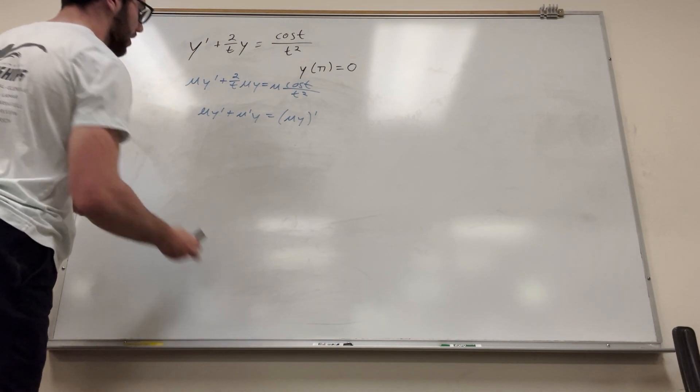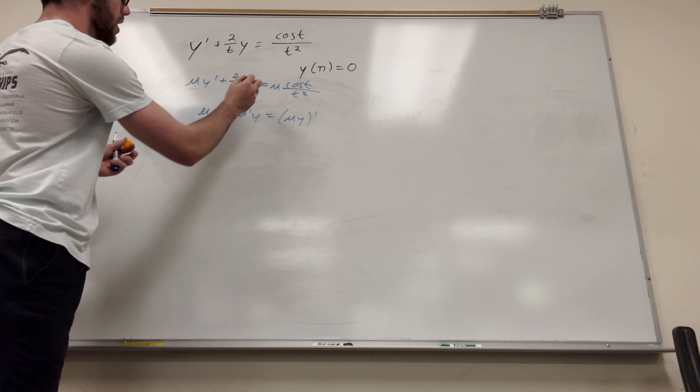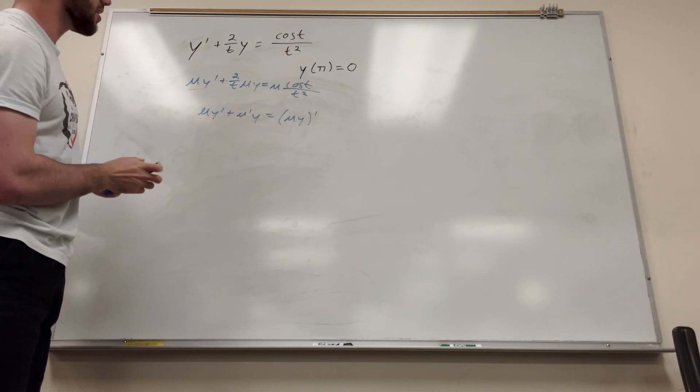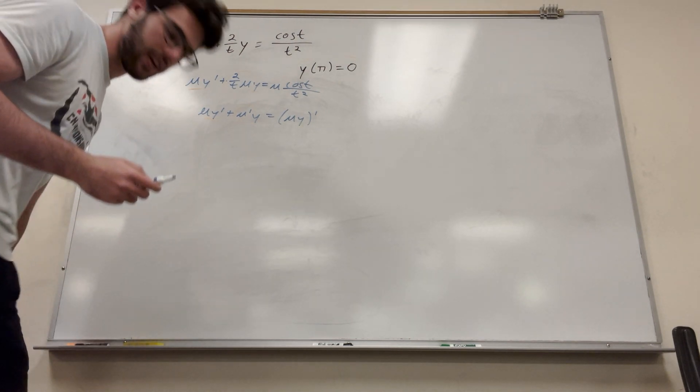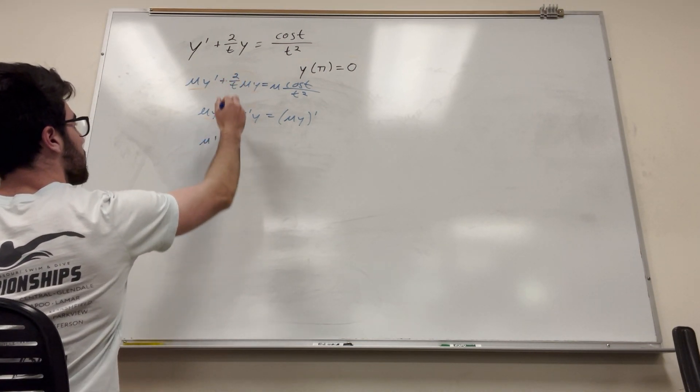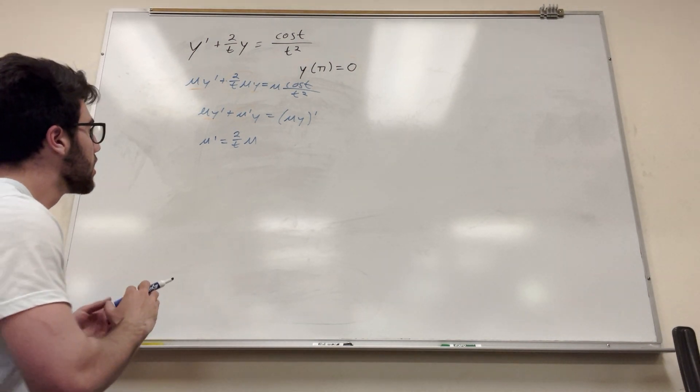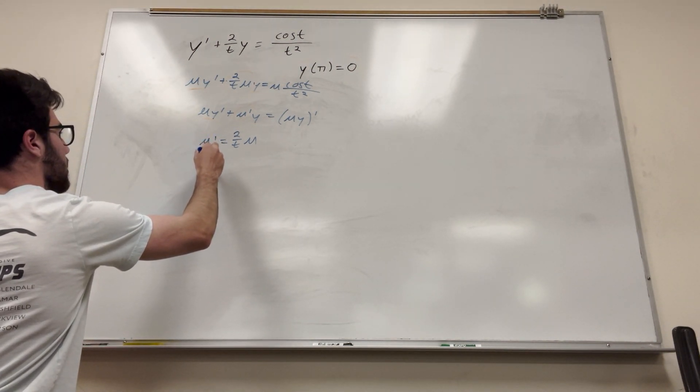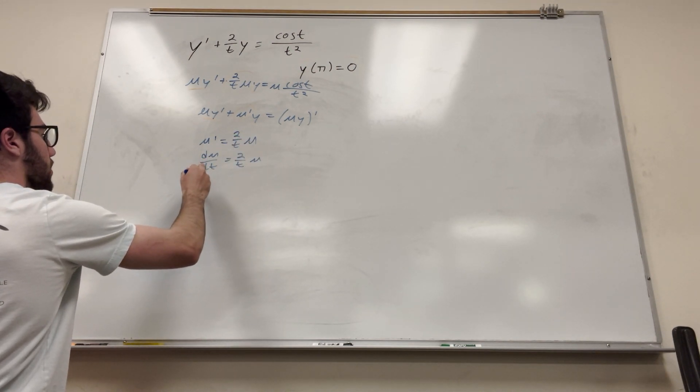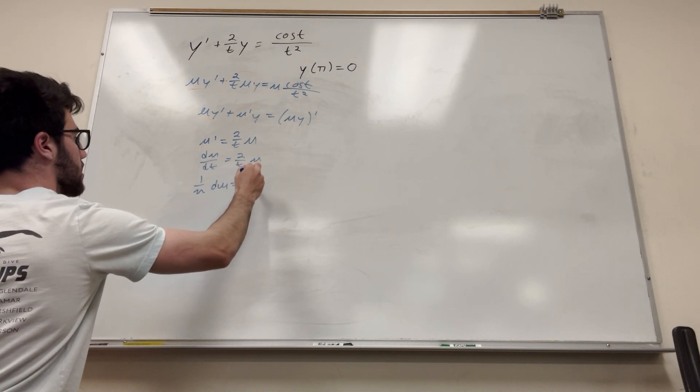So what we already have here is mu y prime. We already have that. Now over here we have y, y, but then we have mu prime, and mu is 2 over t mu. So to figure out what this is going to be, we're going to say mu prime is equal to 2 over t mu. Then we just have to solve out what this would be. So d mu over dt is equal to 2 over t mu. Now we're just going to divide by both sides. So 1 over mu d mu is equal to 2 over t dt.